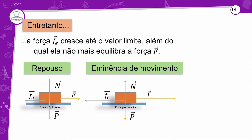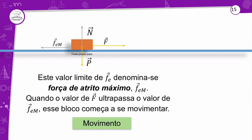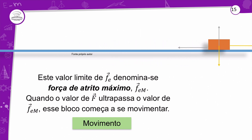A força de atrito estático cresce até um valor limite, além do qual ela não mais equilibra a força — é a partir daquele momento que entra o movimento. Ao entrar em movimento, não se chama mais de estático, mas de cinético ou dinâmico. Na iminência do movimento, os valores das forças na horizontal aumentam — representadas por setas maiores — até chegar ao ponto de entrar em movimento. Esse valor denomina-se força de atrito estático máximo. Quando a força externa ultrapassa esse valor, o bloco começa a se movimentar.